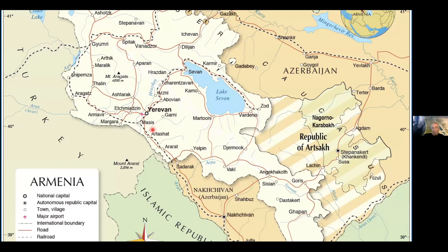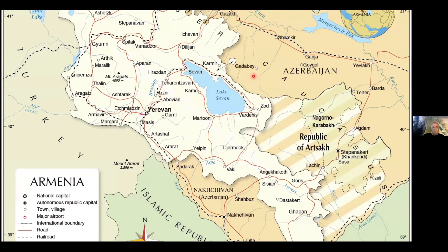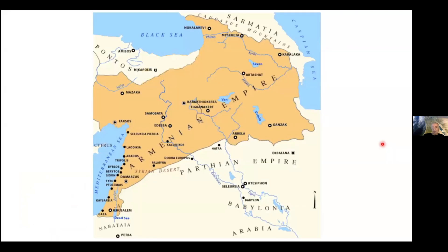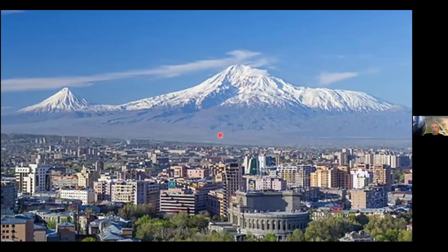Armenia today is a tiny country squeezed between Azerbaijan, Turkey, and Georgia. But two thousand years ago it was a huge empire — in the first century BCE it even ruled over what is today Israel, including Jerusalem and Gaza. Today Armenia is less than half the size of Israel, with about a third of Israel's population and a very small Jewish population. The border runs right next to Mount Ararat, which Armenians can see but no longer hold.